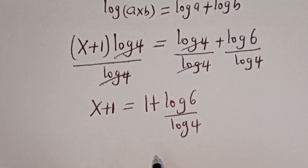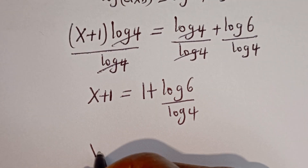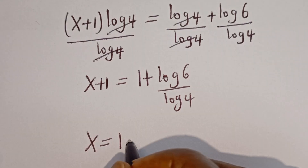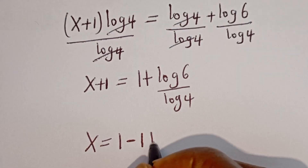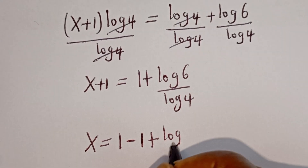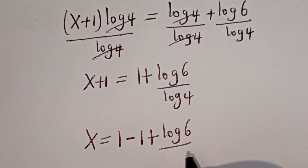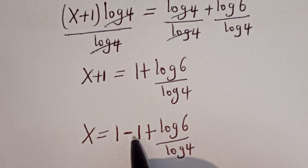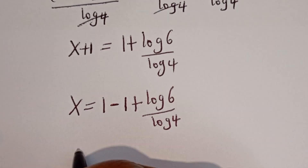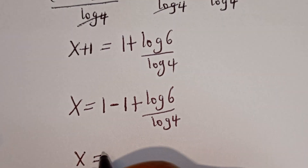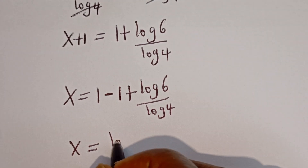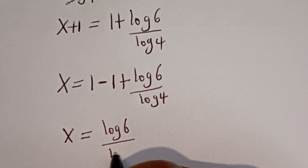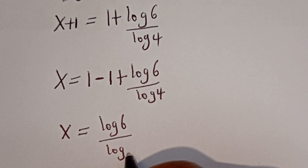Now let's take the 1 to the other side. We have x is equal to 1 minus 1 plus log 6 divided by log 4. Since 1 minus 1 is 0, x is equal to log 6 divided by log 4.